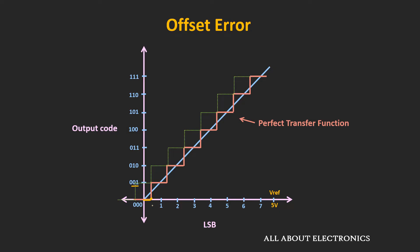When the input goes above 0.5LSB, the output code goes from 001 to 010 — clearly there is an offset error. This offset error can be found by applying 0V to the ADC; if the output code is other than all zeros, there is an offset error. By comparing the actual code to the ideal code, we can quantify the offset error. If the actual transfer curve lies above the ideal transfer curve, the offset error is positive.